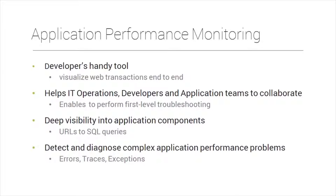Site247's APM Insight is a developer's handy tool that gives visualization of web transactions end to end. It provides unmatched visibility into how web applications behave for developers and IT operations. It enables first-level troubleshooting, deep visibility into application components from URLs to SQL queries, and detection and diagnosis of complex application performance problems through errors, traces, and exceptions.